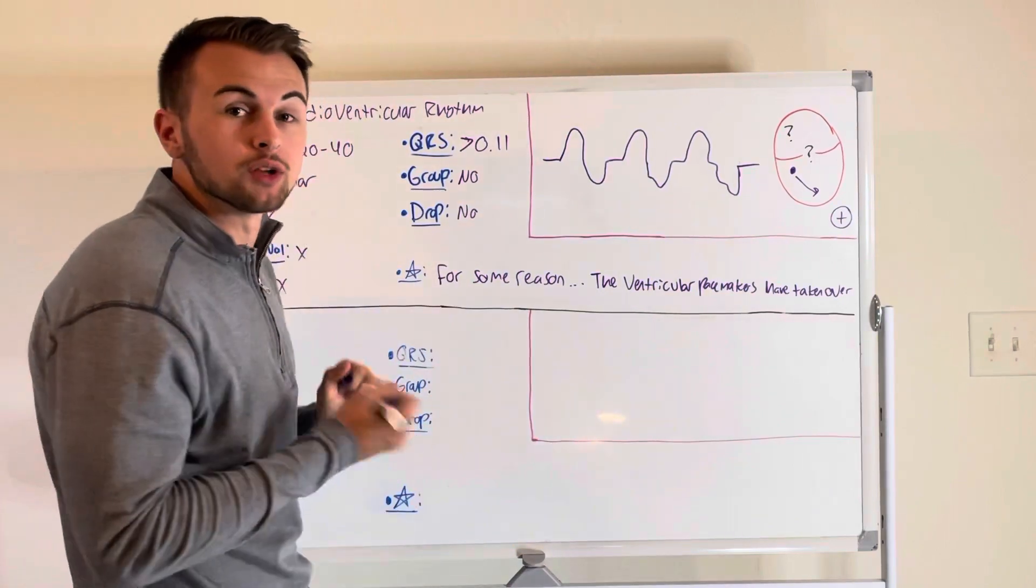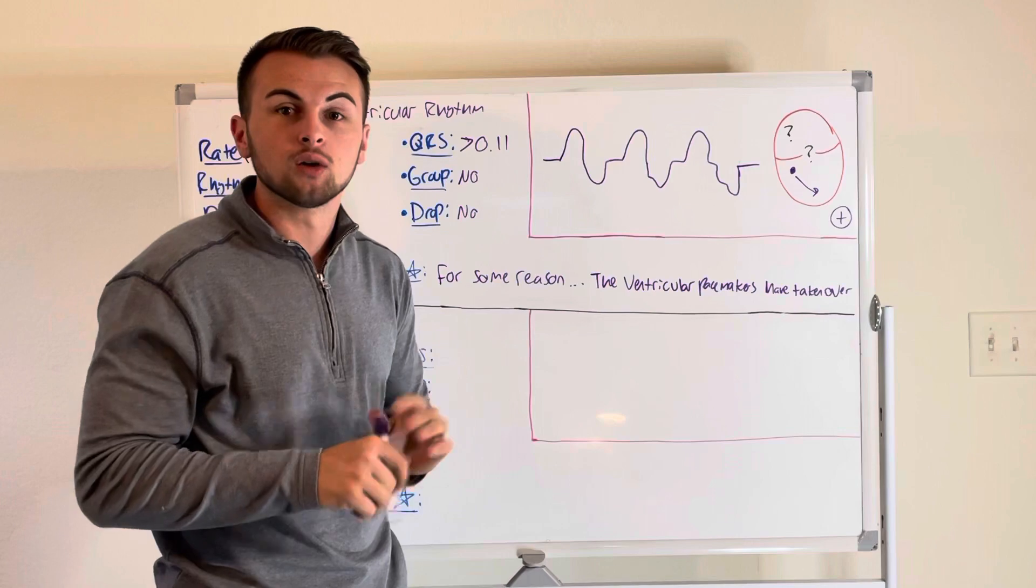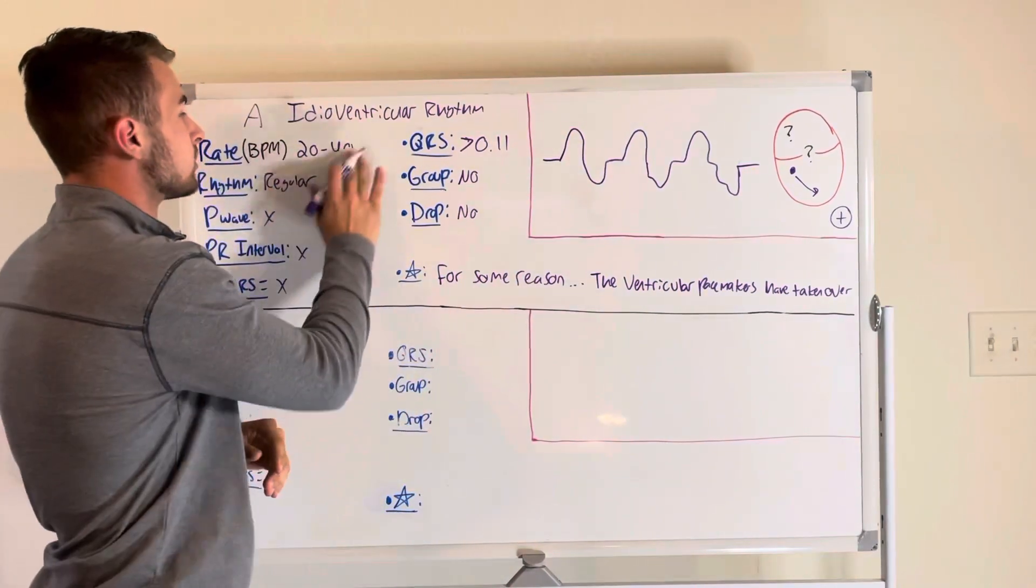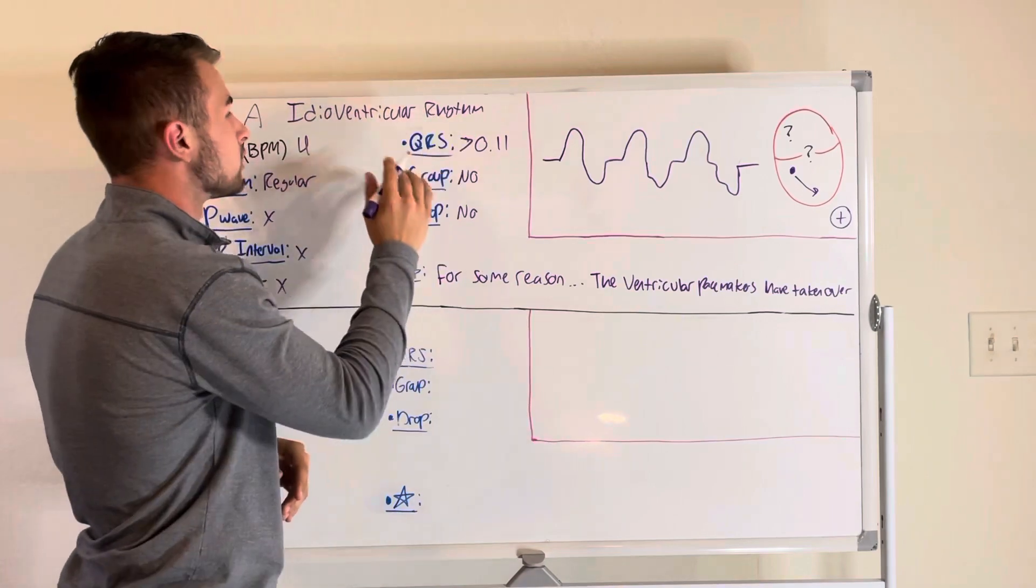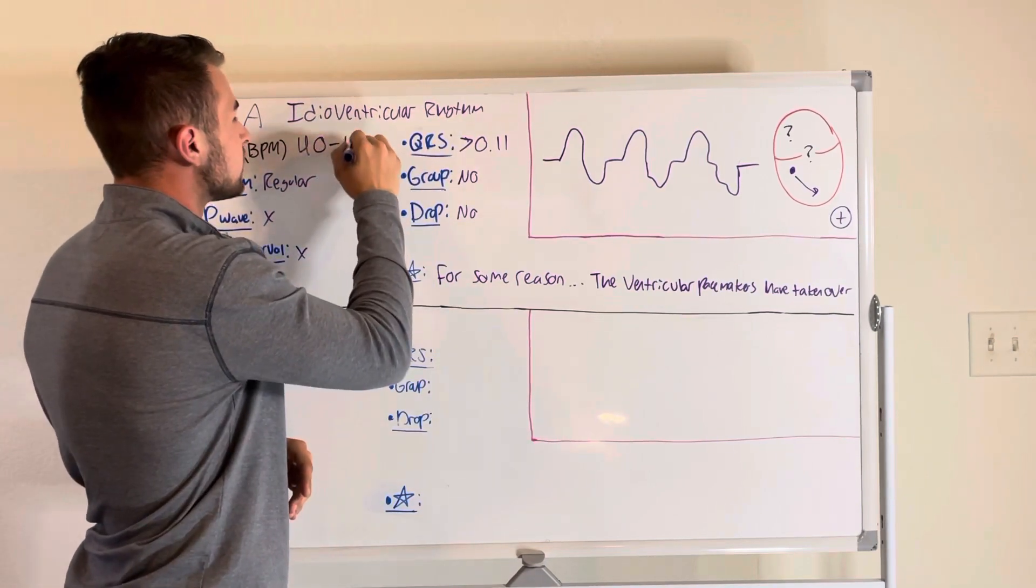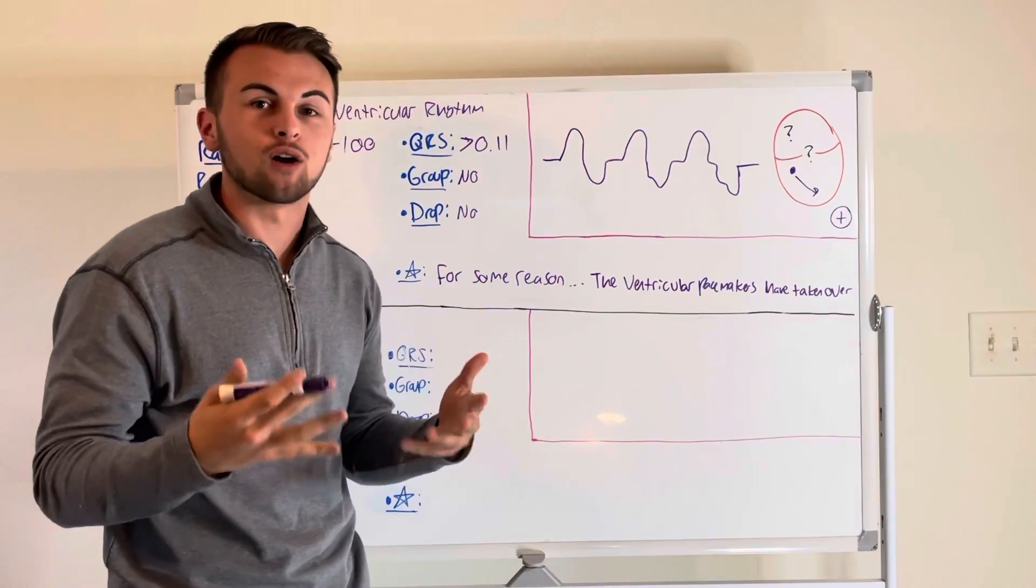Now I will show you the accelerated idioventricular rhythm. The only thing that has changed between an idioventricular rhythm and an accelerated idioventricular rhythm is that the rate is now 40 to 100.